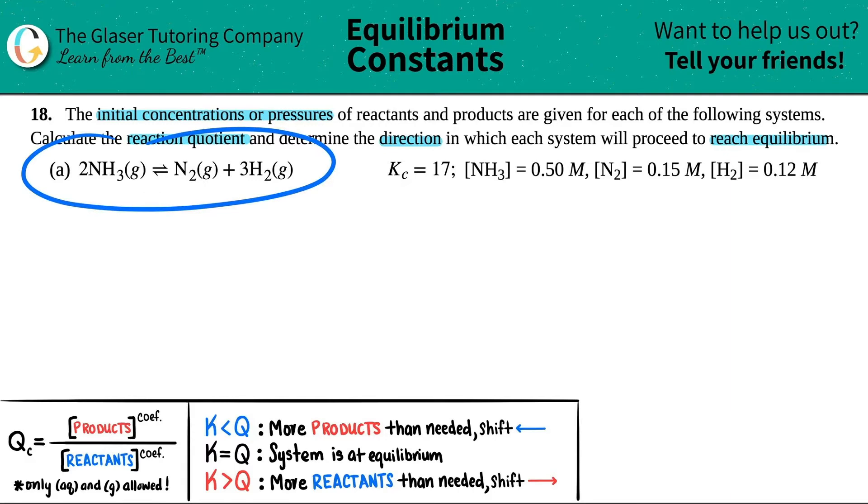So I have a balanced equation. I'm going to write it out. I see that it has coefficients already, there's two and three. So I'm going to assume it's balanced, but you could always pause the video. So we got 2NH₃ gases, which will come to equilibrium, there's a double arrow, with N₂ gas plus 3H₂ gas.